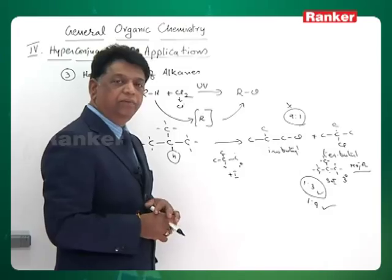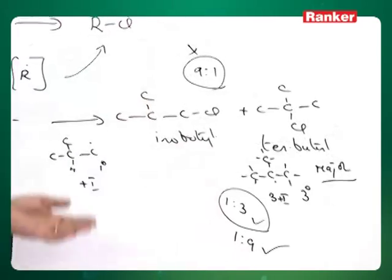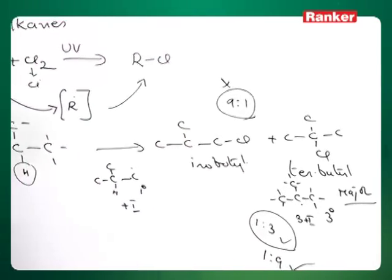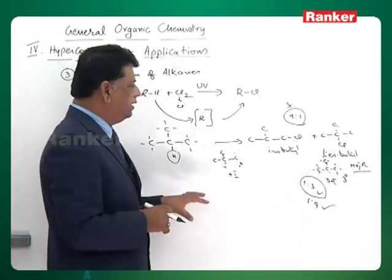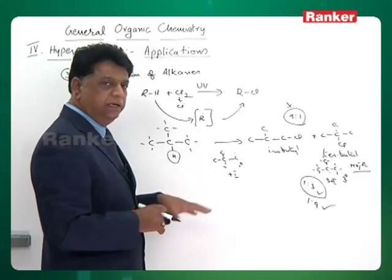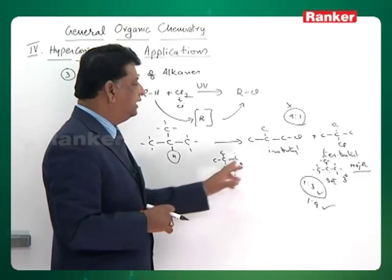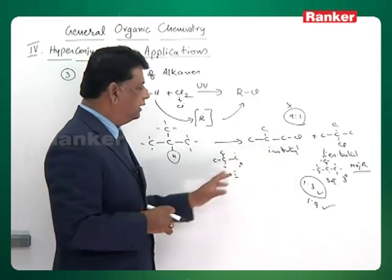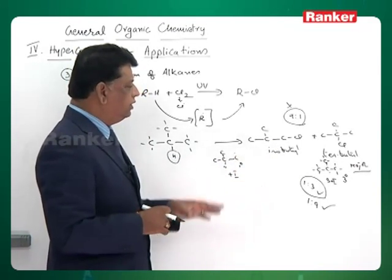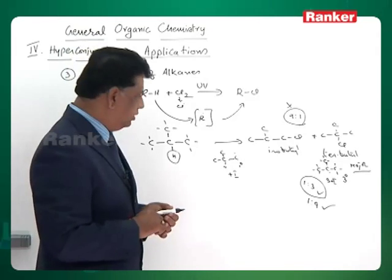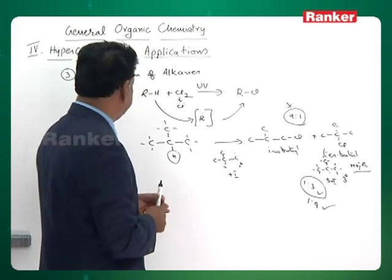Tertiary butyl chloride comes nine times over the isobutyl product. Here, the intermediates decide the stability ratio with reference to the number of hyperconjugable hydrogens.